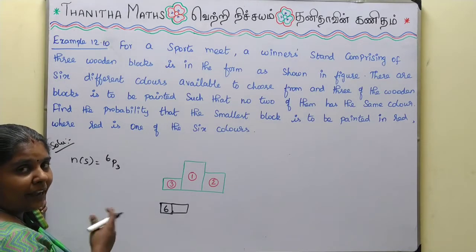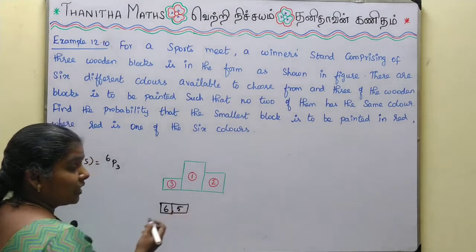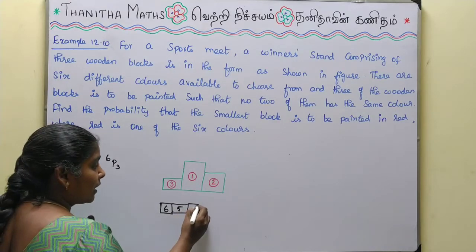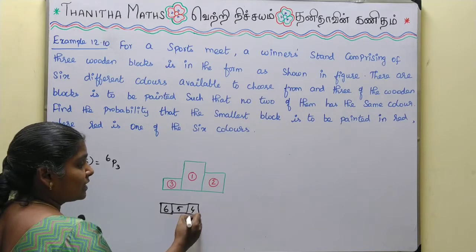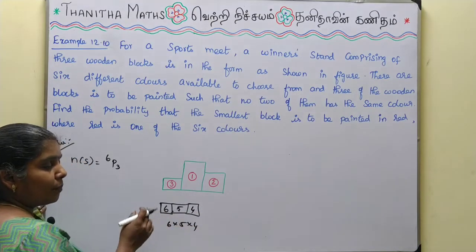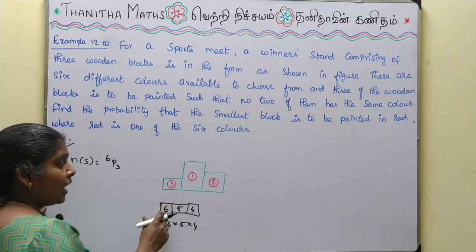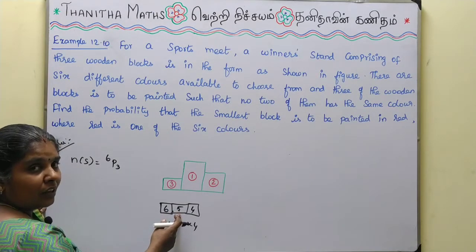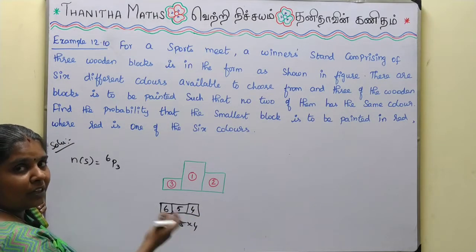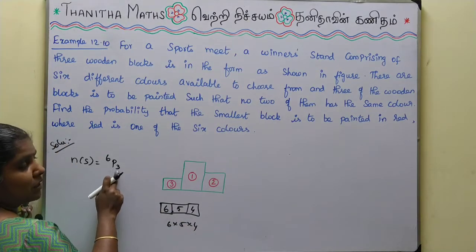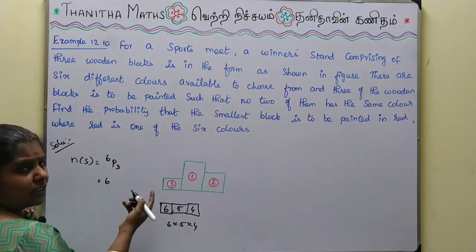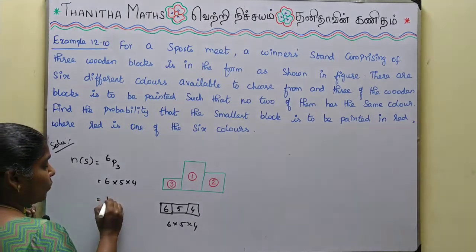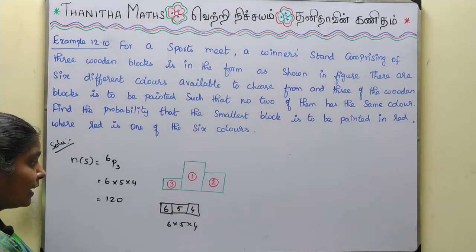In the first block, how many colors? We can use six colors in the first block, five colors in the second block, and four colors in the third block. So we use 6P3, which equals 6×5×4. So 5×4 is 20, and 20×6 is 120. Therefore n of S is 120.